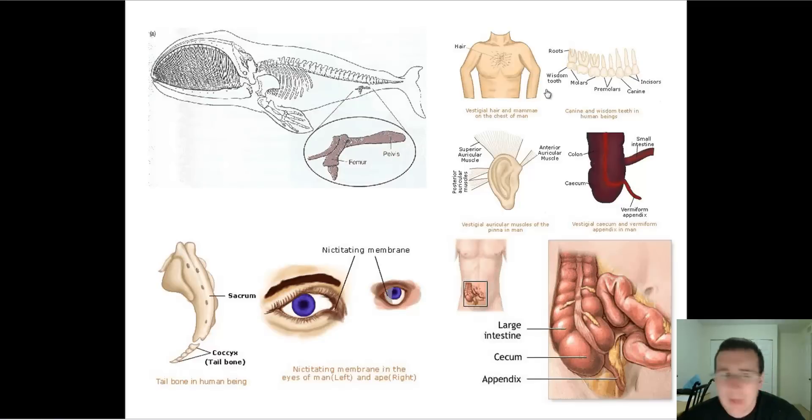The muscles that move the ears, for example. We no longer have the functions that other animals have to articulate their ears to move towards the direction of the sound. We move our necks instead, but we still have some of those muscles left.